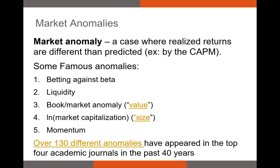Beta might not be our only measure of risk — there could be other risk factors besides market risk that investors take into account and that influence share prices. With all these problems, it's understandable to believe some securities with specific characteristics might outperform the market. When a security's return outperforms or underperforms the expected return calculated using the CAPM, we call this a market anomaly — found when securities with specific characteristics produce a statistically significant positive or negative alpha.